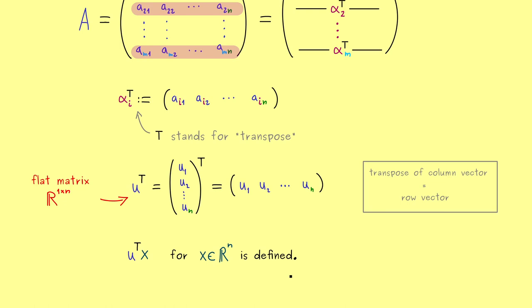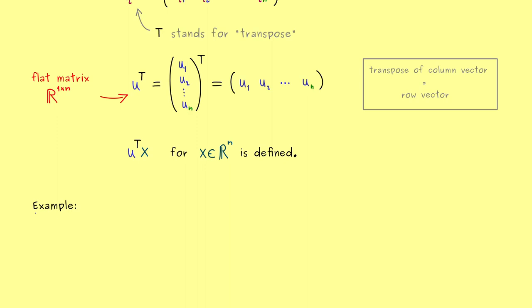So you see this is not complicated at all, but we definitely should look at an example. Let's apply the matrix vector product in this case for concrete numbers. Maybe our row vector here is (1, 3, 5) and the column vector x can be given by (2, 4, 6).